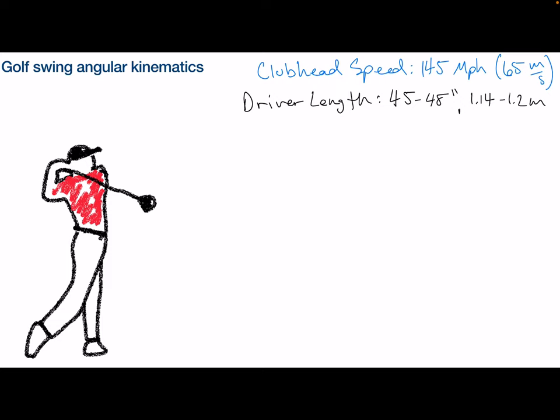So for today's problem, we're going to calculate the angular velocity from a swing with a 48-inch driver, producing a clubhead speed of 65 meters per second, and then determine how much faster you would need to swing a 45-inch club to attain the same clubhead speed.